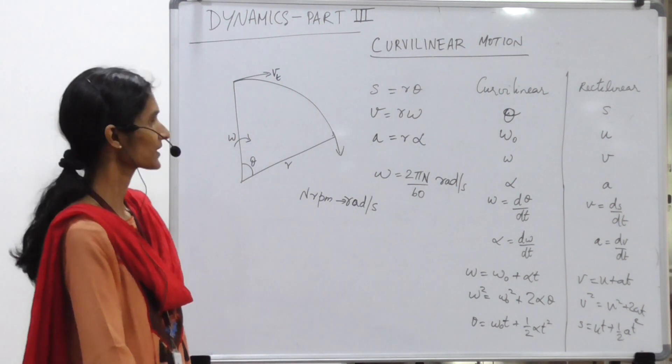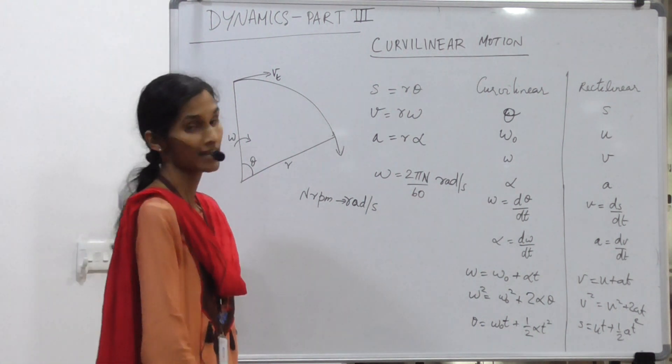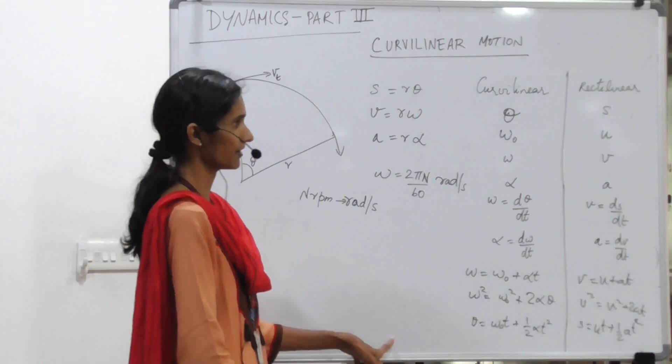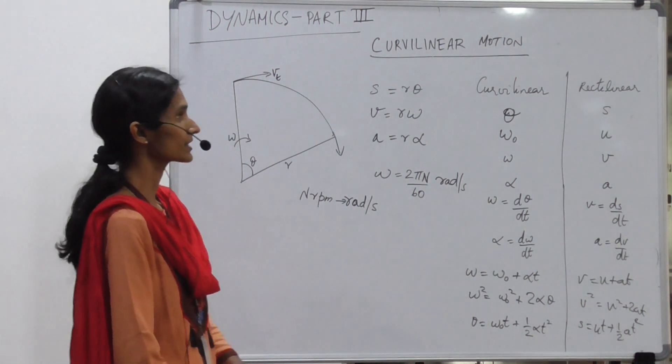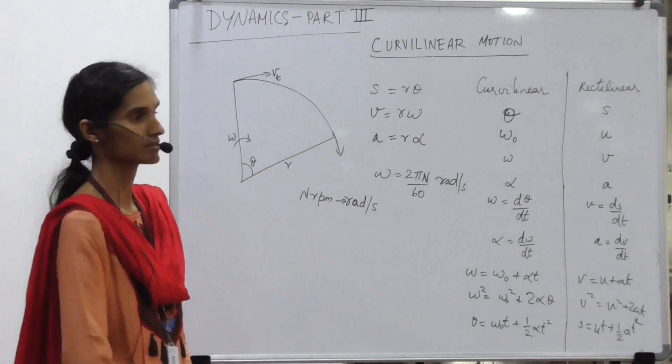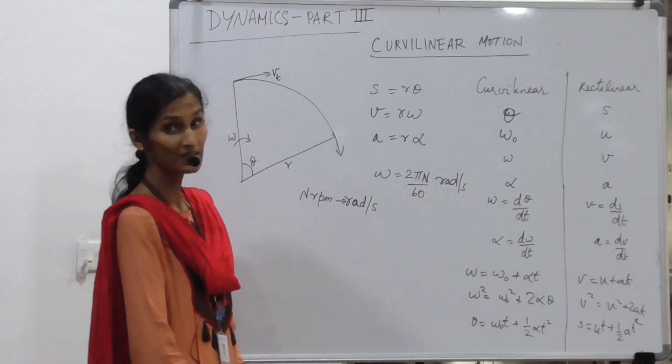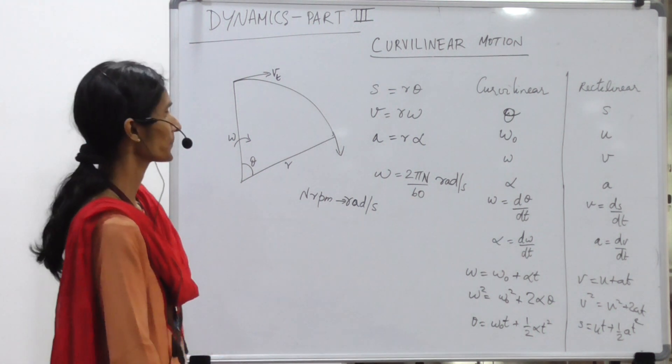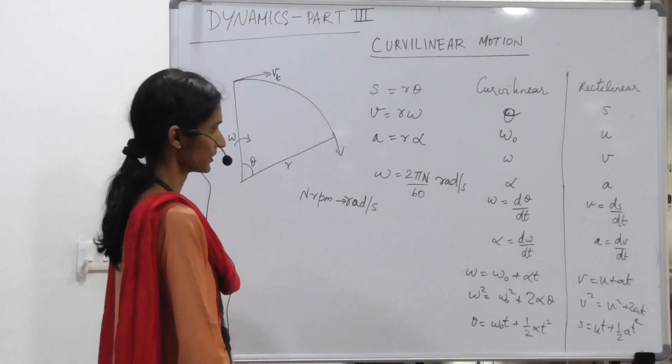Theta is the displacement which is angular, omega is the angular velocity, omega_0 is the initial angular velocity, alpha is the angular acceleration, and the relations are just as we have them in rectilinear motion. The relation between the rectilinear and curvilinear quantities are as follows: s equals r theta where it is connected using the radius of the motion. Velocities are r omega and acceleration is r alpha.